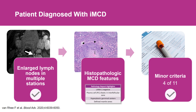We gave this patient siltuximab, and within 3 days of the first infusion, we began to see improvement in symptoms and some of the laboratory abnormalities begin to improve. By about seven weeks, each of the laboratory abnormalities had completely returned to normal, and this patient was back to his prior state of health, and would be continued on every three-week dosing of siltuximab moving forward.